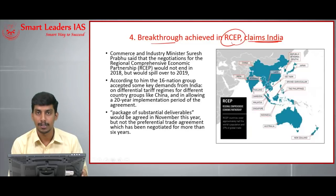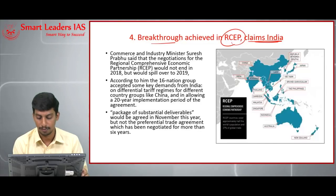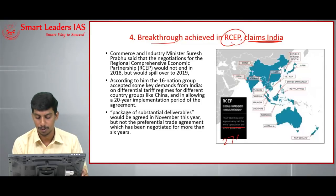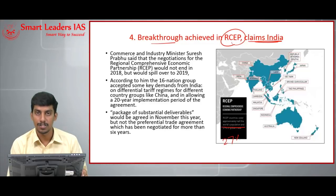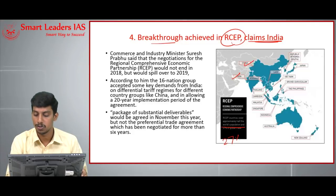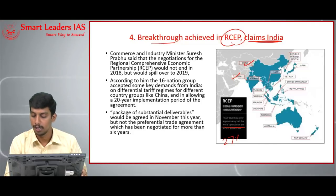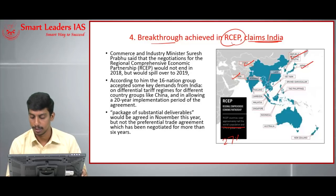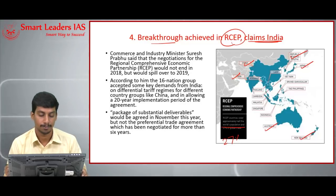RCEP countries cover approximately half of the world's population and 27% of global trade. The Regional Comprehensive Economic Partnership includes 10 ASEAN countries plus six others: India, China, Japan, the Republic of South Korea, Australia, and New Zealand.